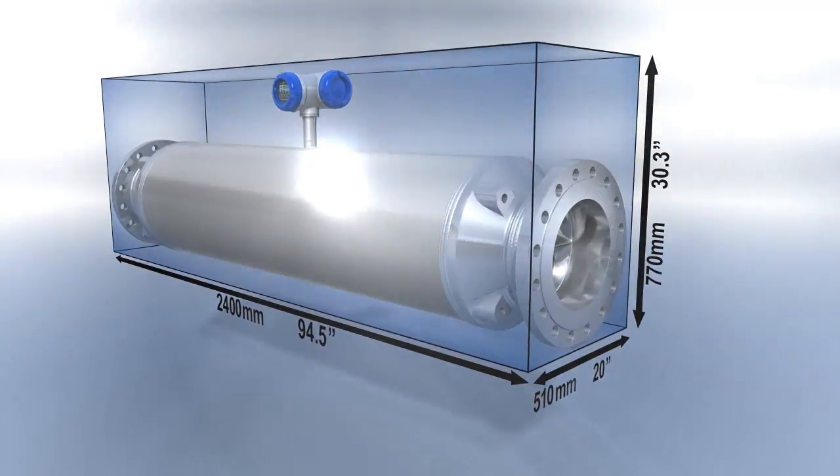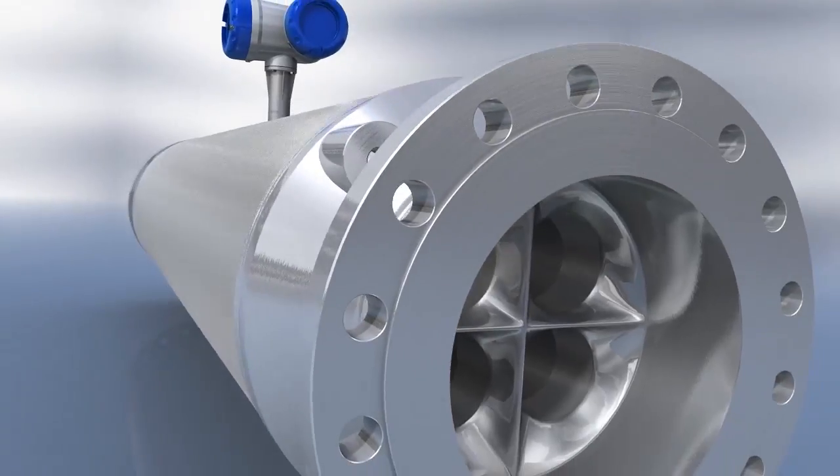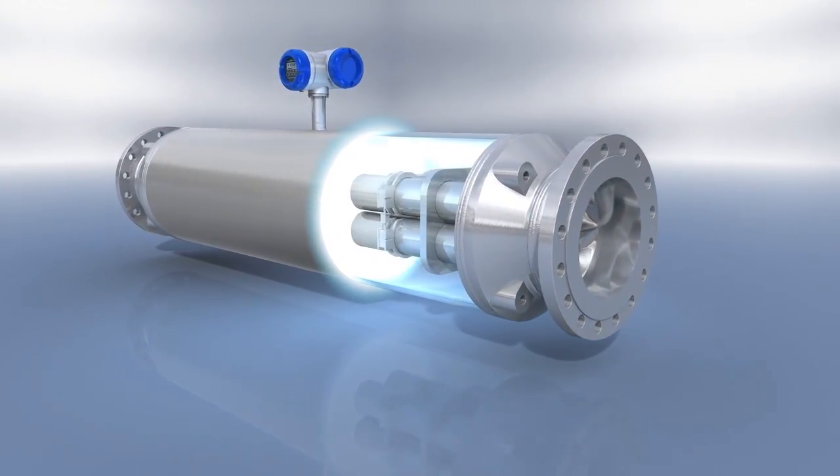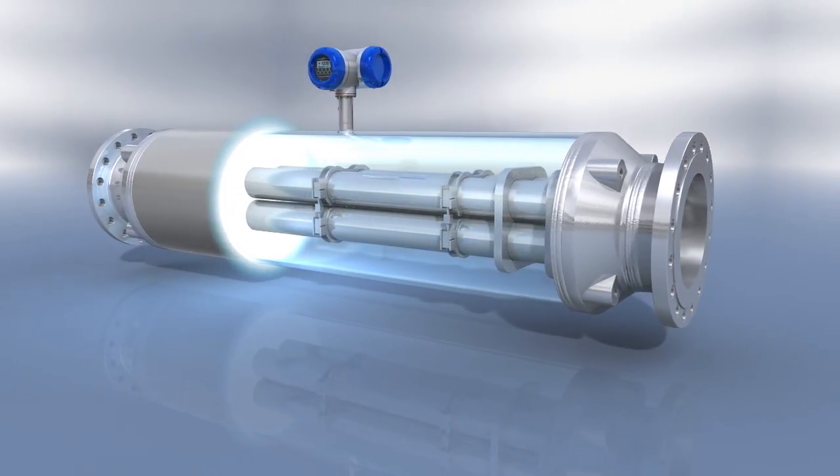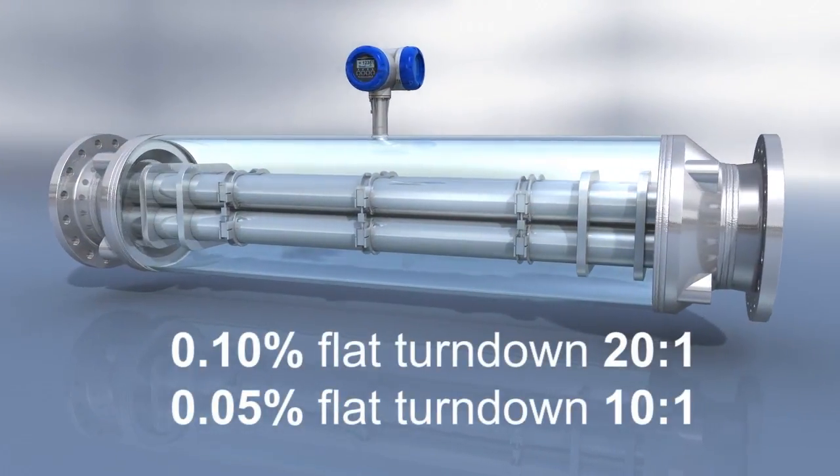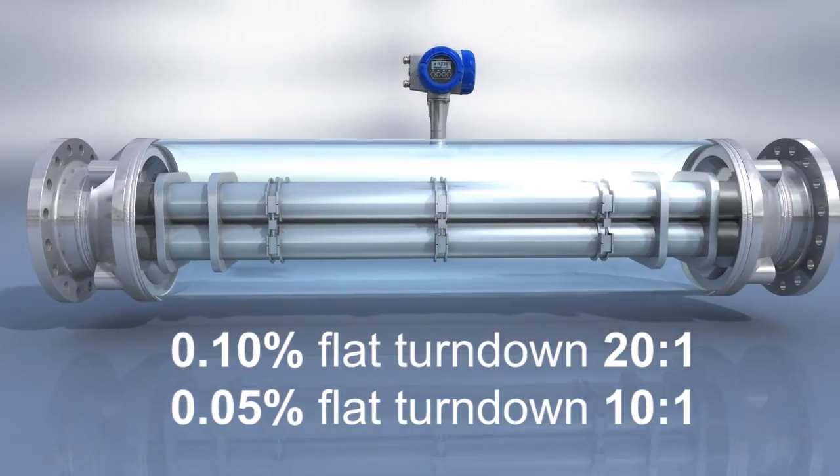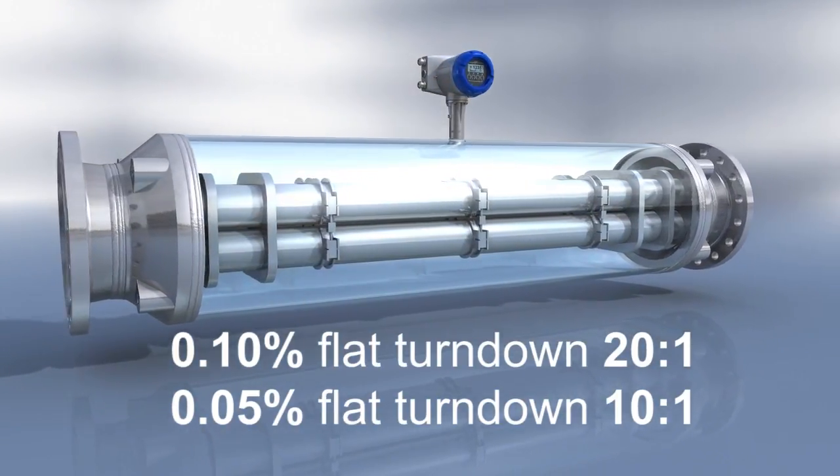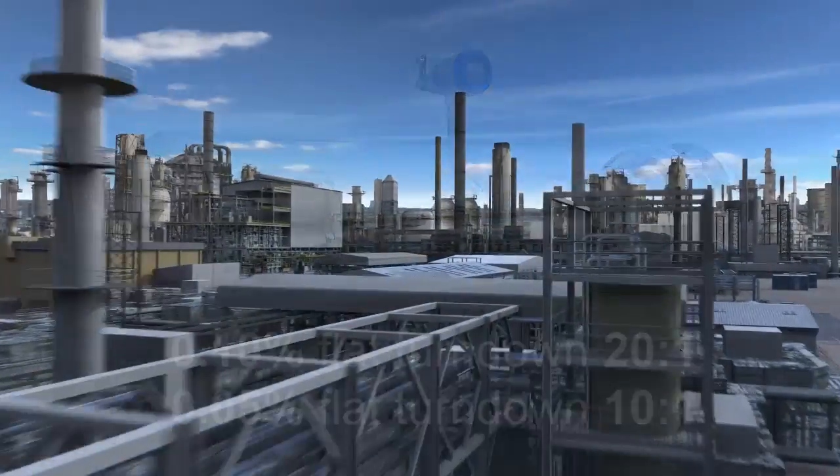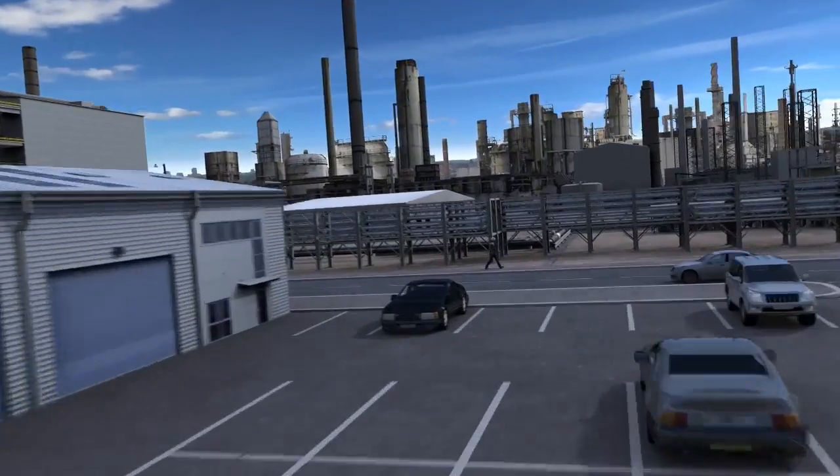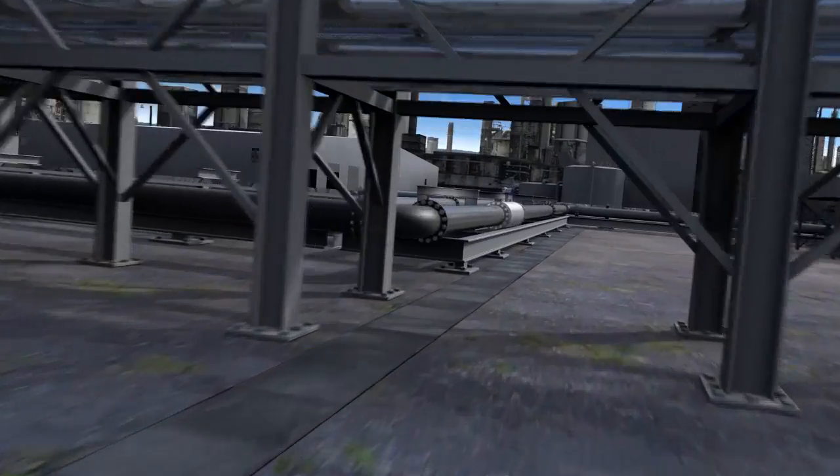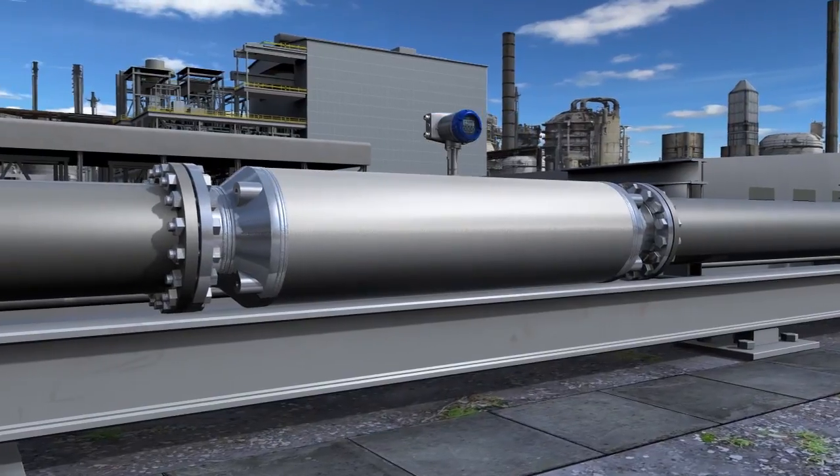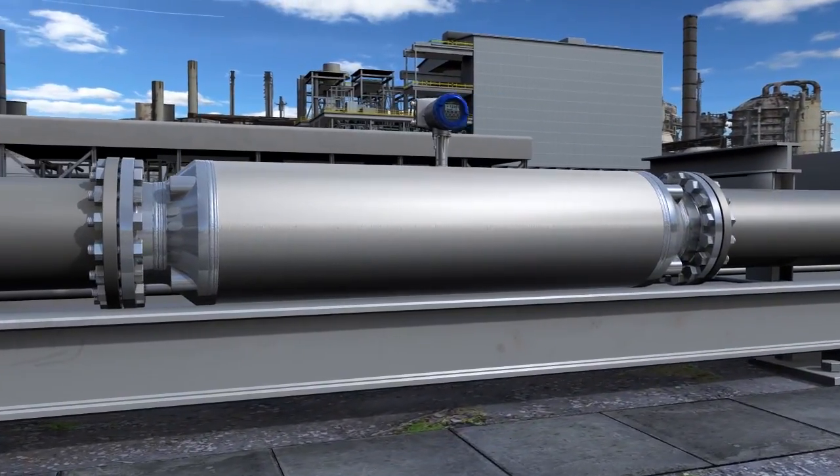The meter is available in duplex and super duplex with an approved secondary containment option. Accuracy is 0.1% with a turndown of 20 to 1, and an optional 0.05% flat accuracy with a turndown of 10 to 1.